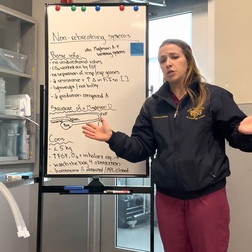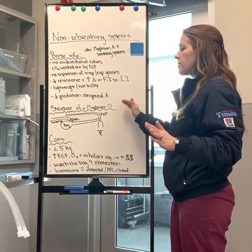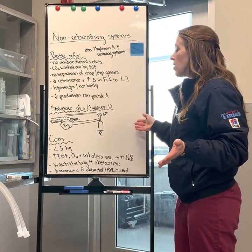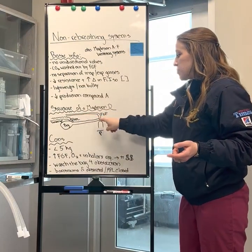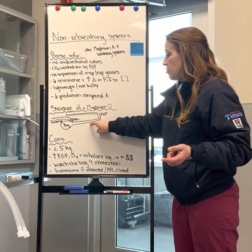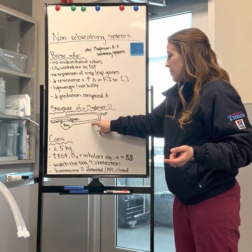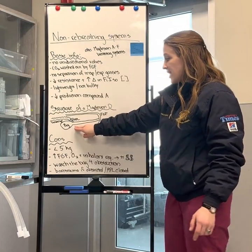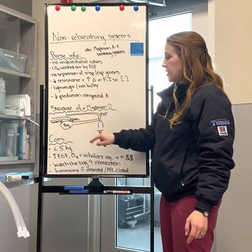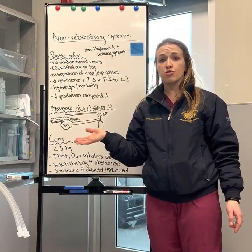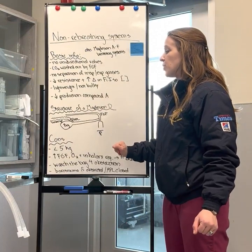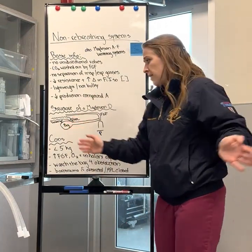Looking at the structure of the Mapleson D: the fresh gas flow pipe enters very close to the patient end. Corrugated tubing runs away from the patient, alongside which sits a reservoir bag and an APL valve. The APL valve allows us to control ventilation and provide IPPV — intermittent positive pressure ventilation. Off the APL valve there is typically a scavenging pipe.